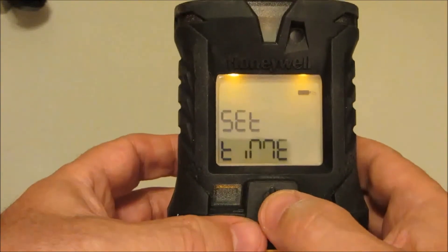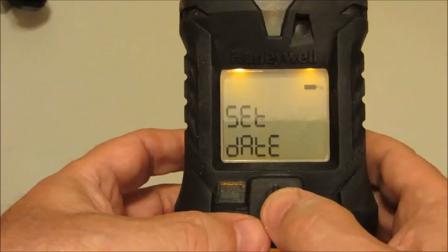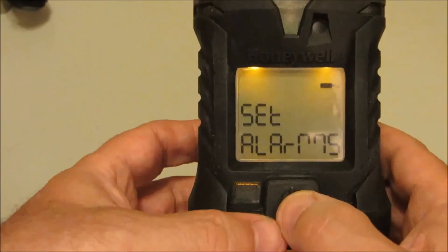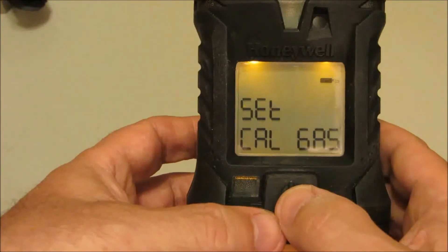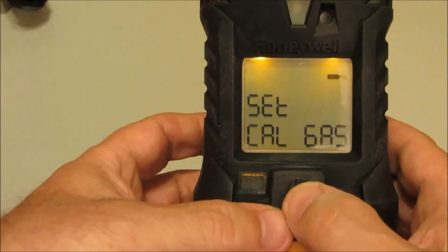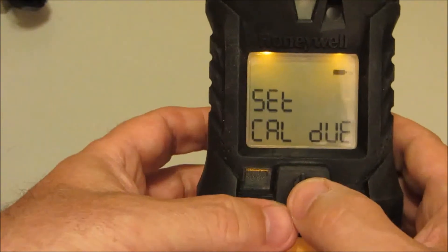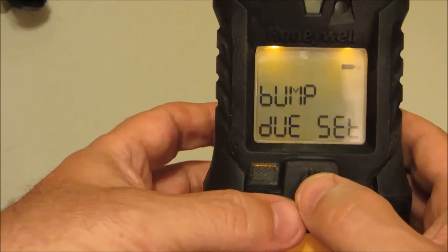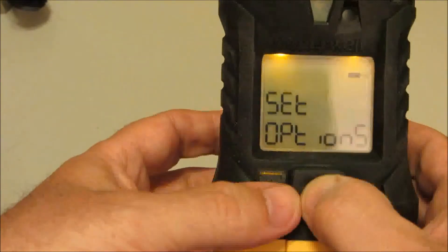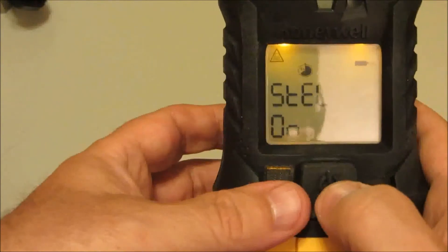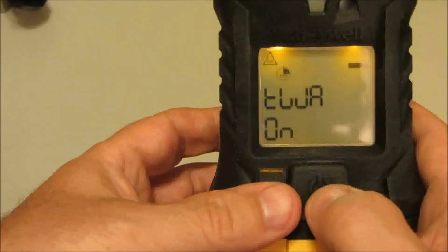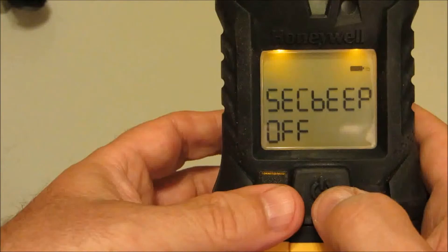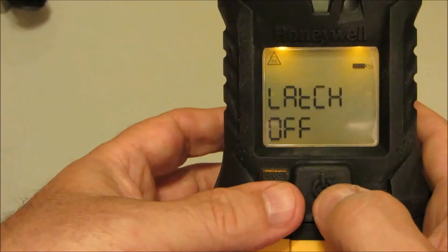Set time. Set date. Set alarms. Set cal gas if you want to adjust from 100 ppm CO to 50 ppm. Set the calibration due date. Set bump due. For options, you can go into the submenu and adjust the STEL on or off, the TWA on or off. Security beep default is off. Latching alarms default is off.